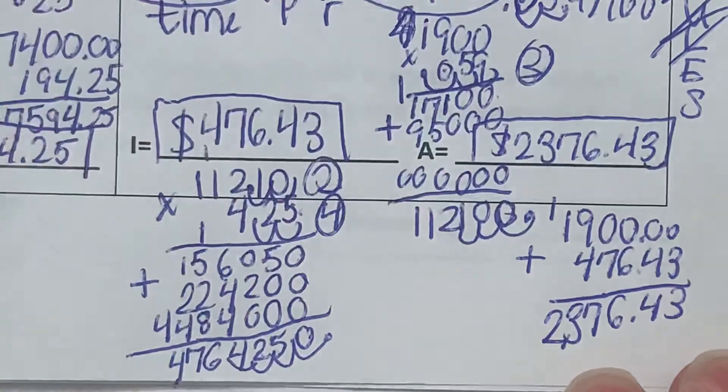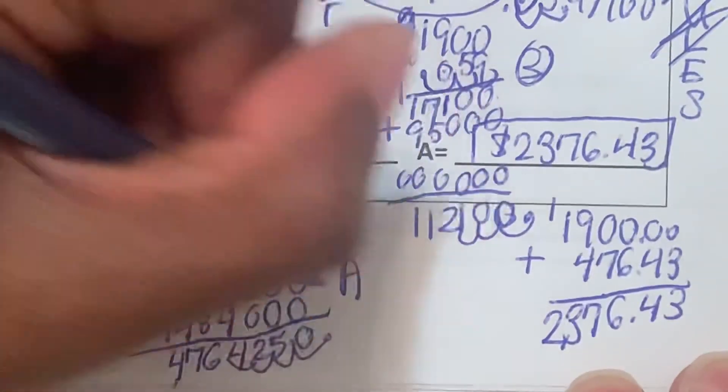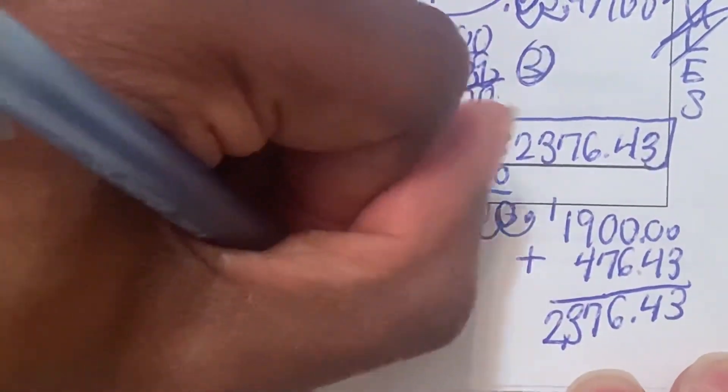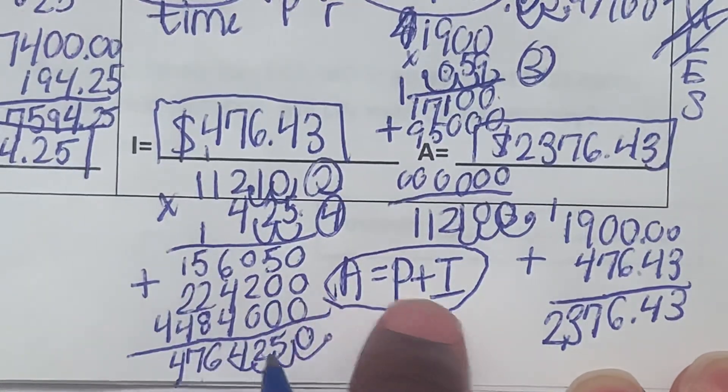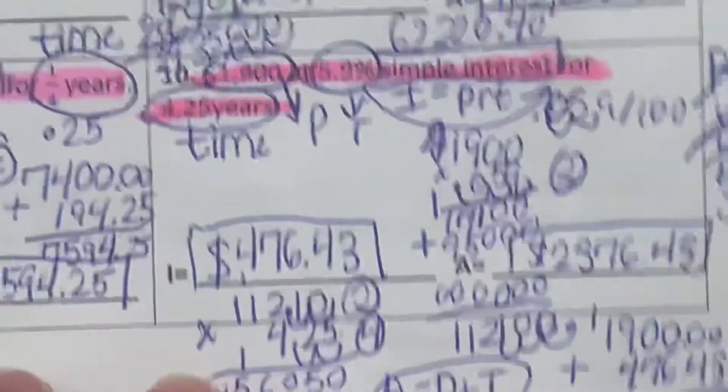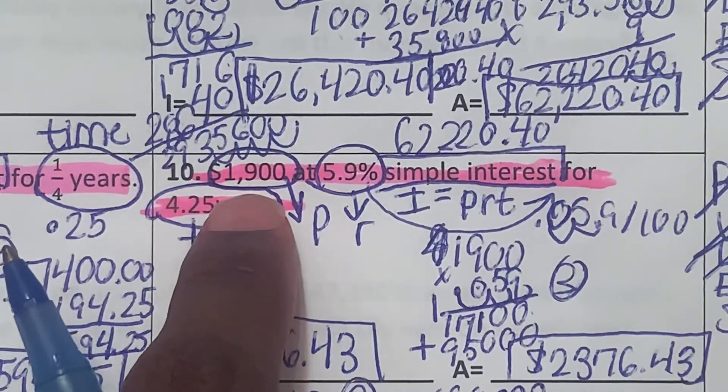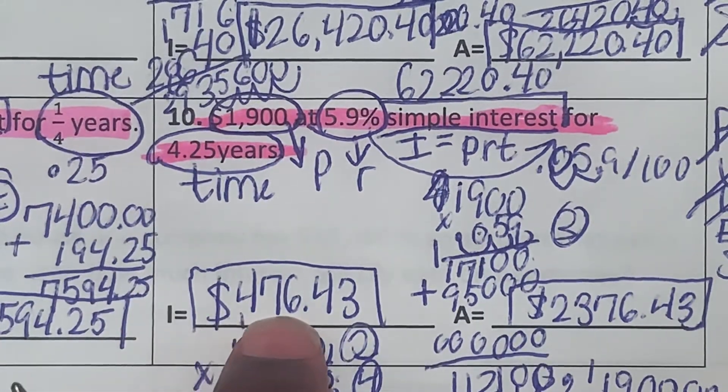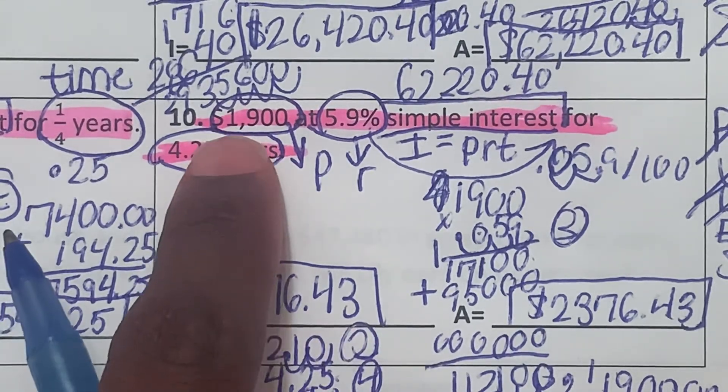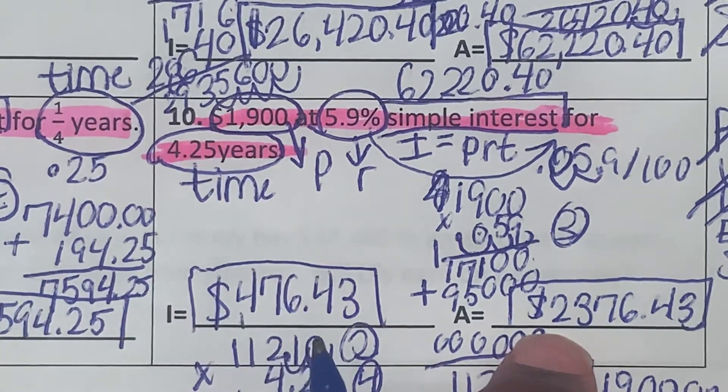And remember, the total amount equals the principal plus the interest. The total amount is the principal plus the interest. If the principal was $1,900, we added the interest $476 and 43 cents, plus $1,900, we got $2,376 and 43 cents.